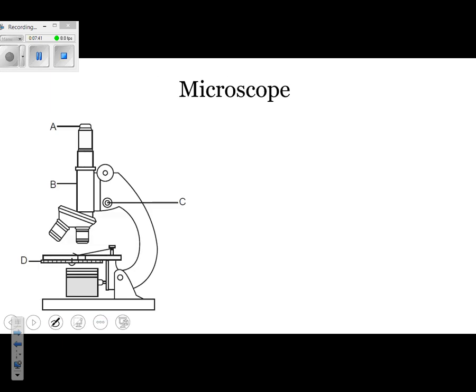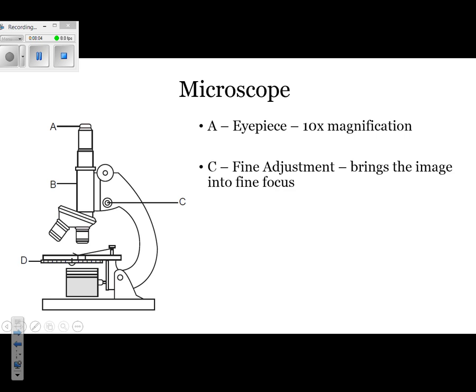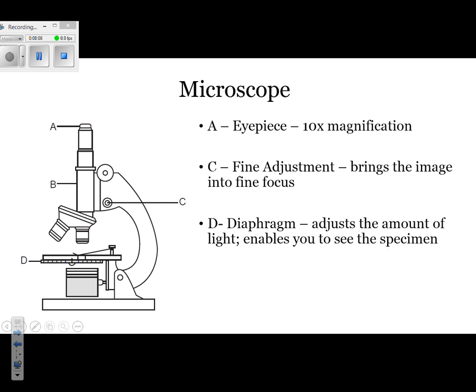The last thing we need to know about is the microscope — you should know the parts. The eyepiece is labeled A and gives you ten times magnification. C is the fine adjustment, which brings the image into fine focus. D is the diaphragm — that disc right underneath the stage — which allows you to control the amount of light coming through, enabling you to see whatever you're looking at on the slide. The coarse adjustment brings things into rapid focus, but you should only use it under low power; otherwise, you might damage the slide.